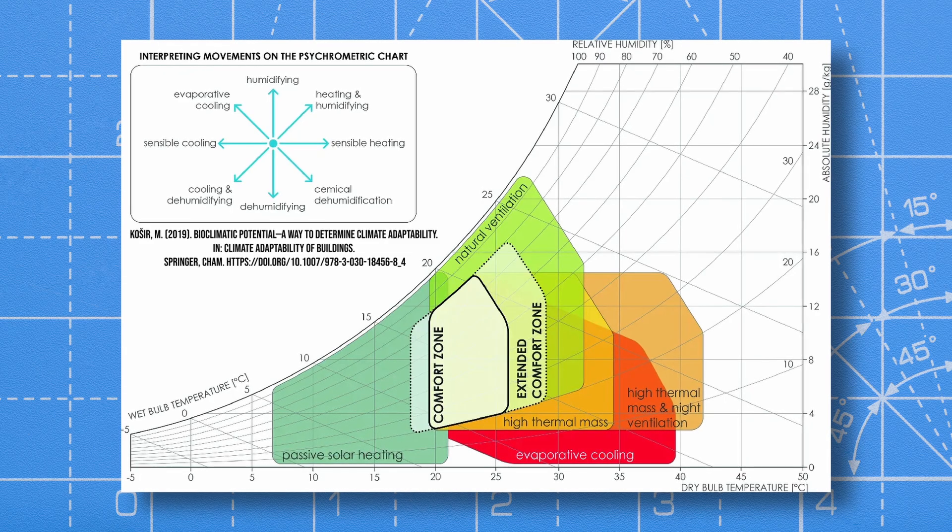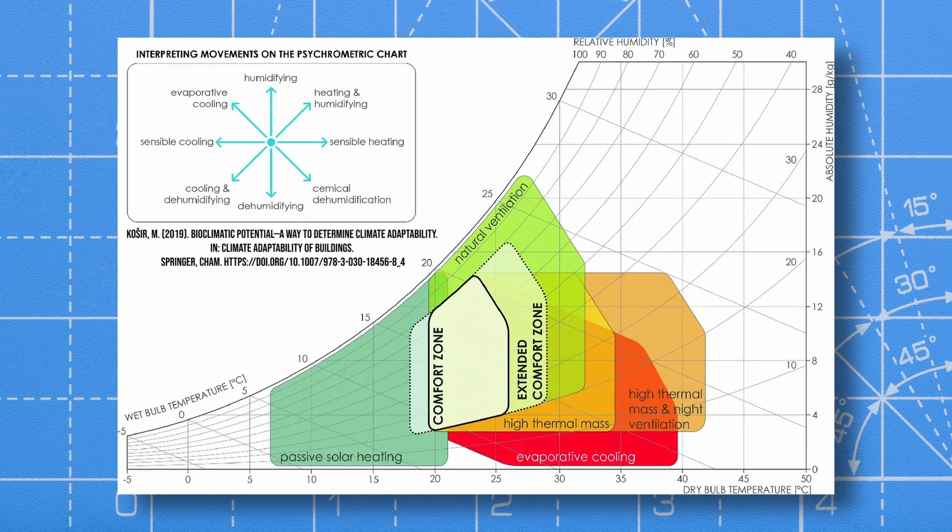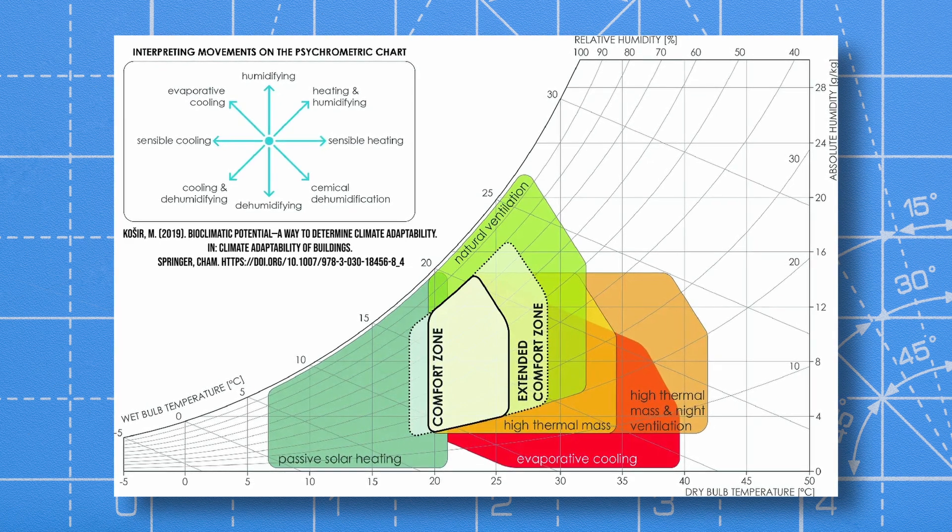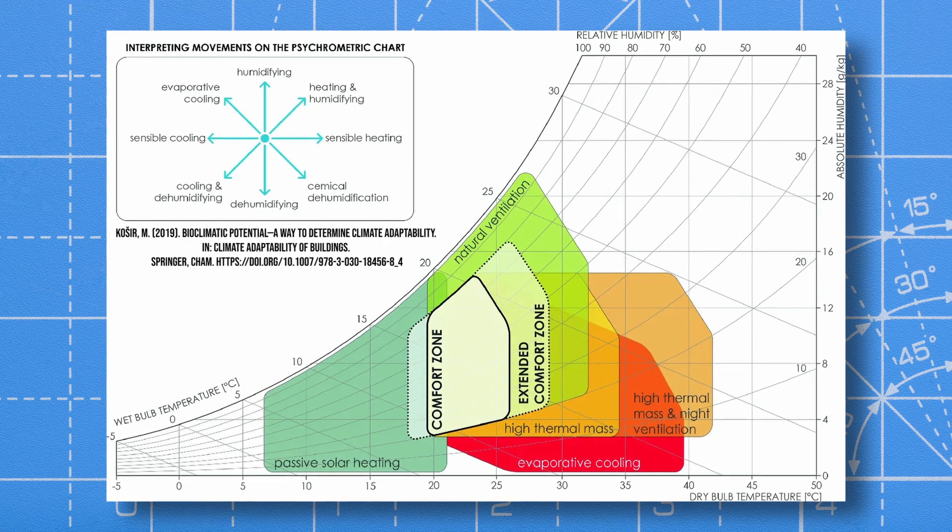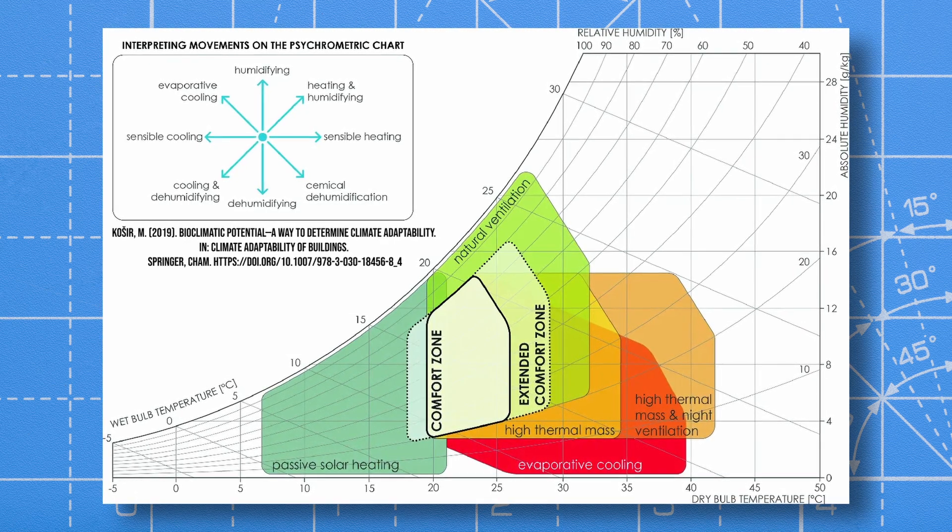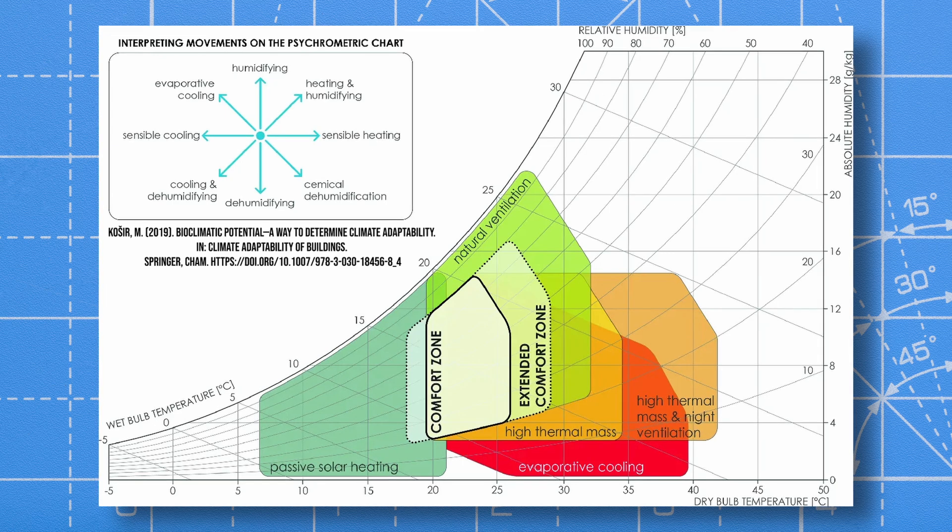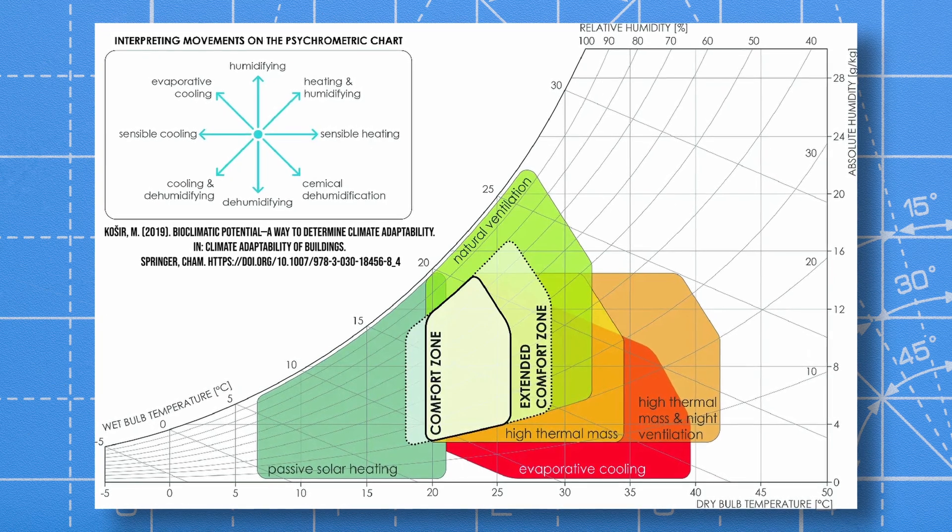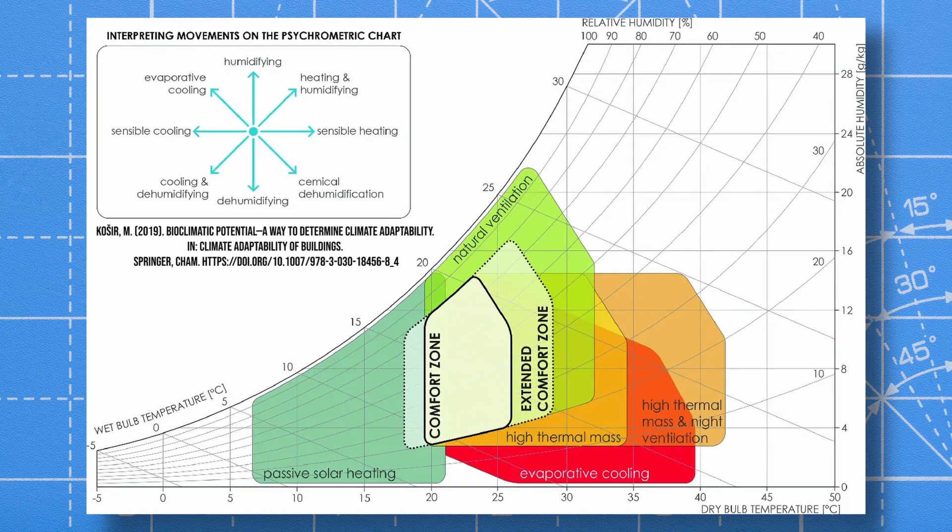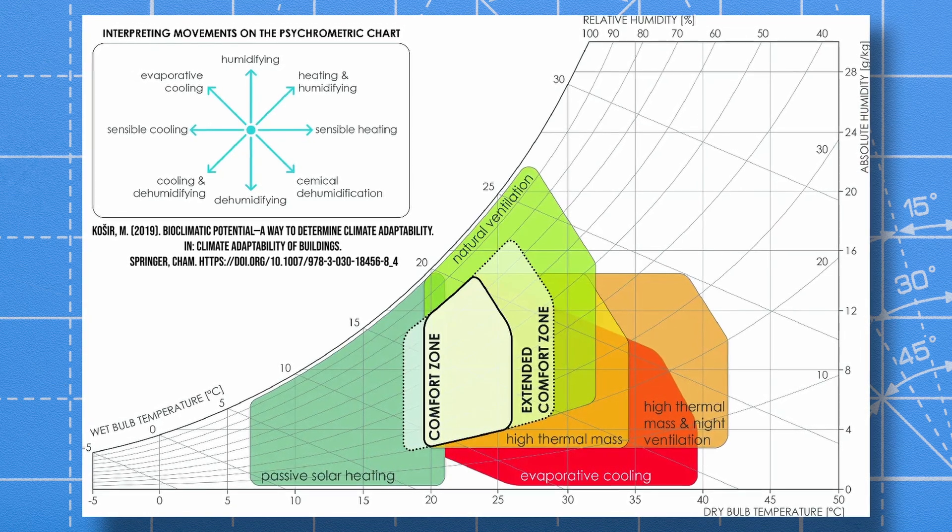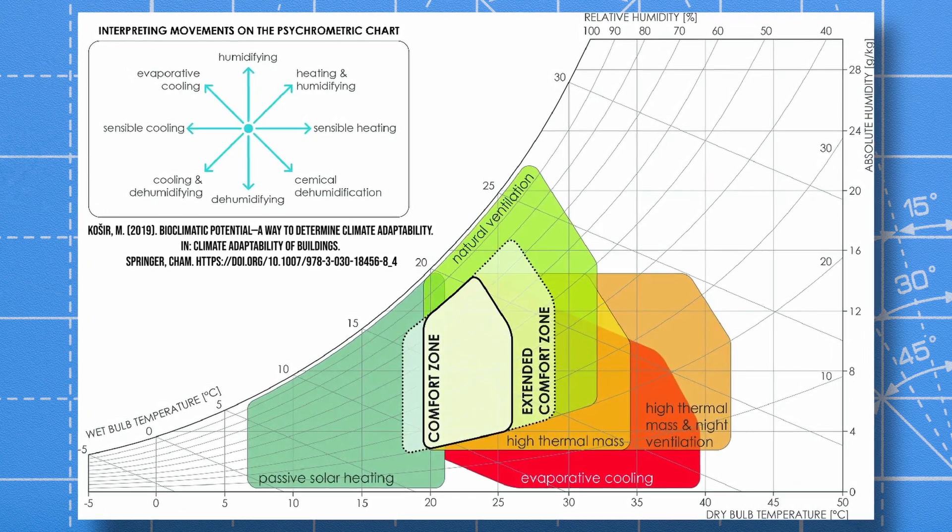For decades, the bioclimatic chart has been a go-to for architects. It is based on the psychrometric chart, which maps air temperature and humidity, and it suggests passive design strategies like solar shading, natural ventilation, and thermal mass. The idea is that by plotting your local climate on this chart, you can design buildings that work with the environment, not against it.